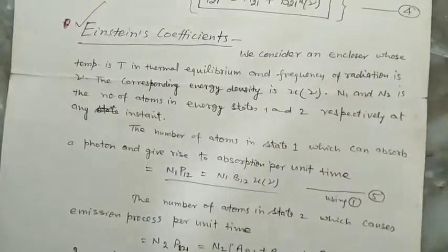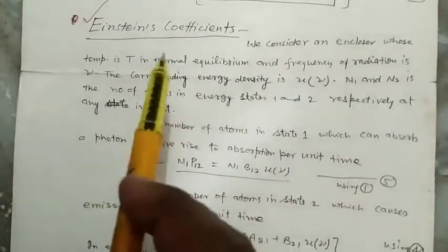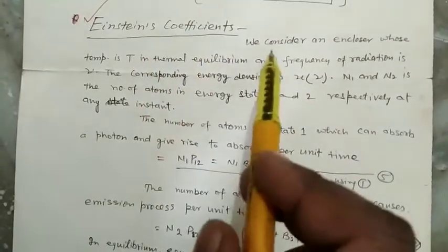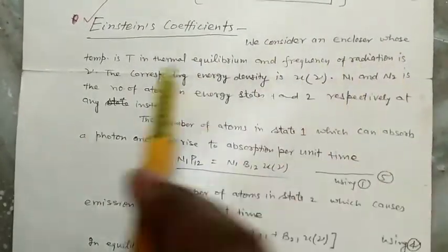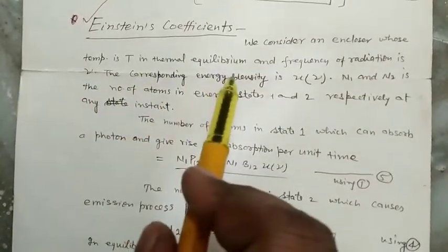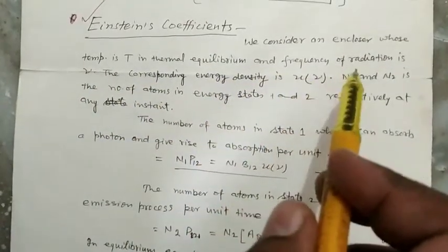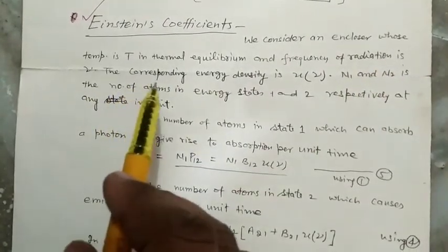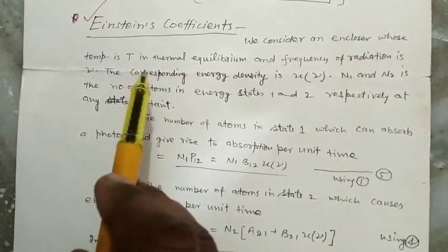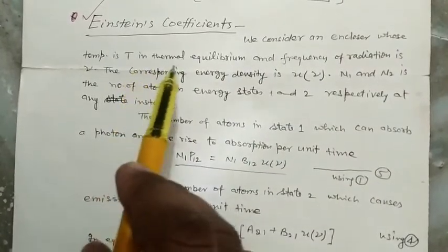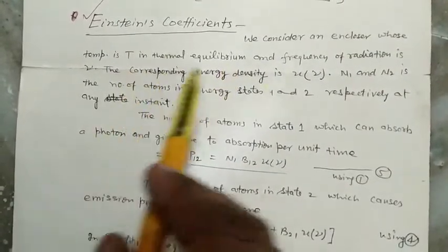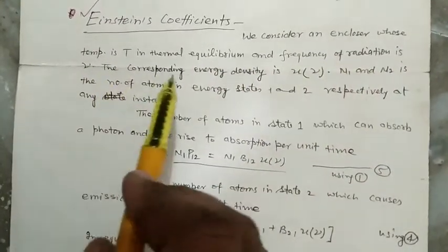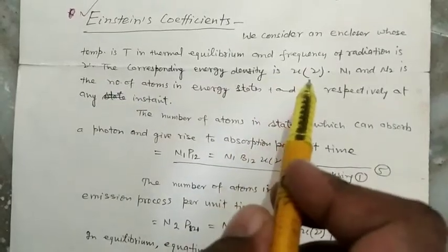Now we are going to find out the relation between all the Einstein's Coefficients. We consider an enclosure whose temperature is T in thermal equilibrium and frequency of radiation is ν.